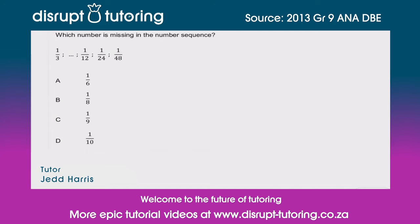Hey peeps, it's Jed here from Disrupt Tutoring and as always it's a pleasure to join you. Today we've got a number sequence question. I'm going to get straight into it. They've asked us which number is missing in the number sequence below. We start off with 1/3, then we've got the gap, so that's obviously what they want us to find, then 1/12, 1/24, 1/48.